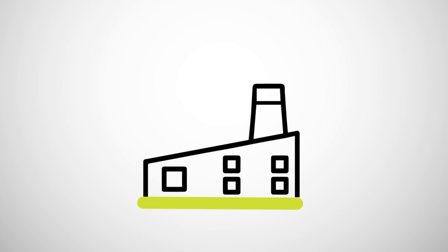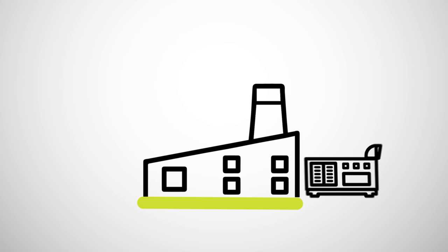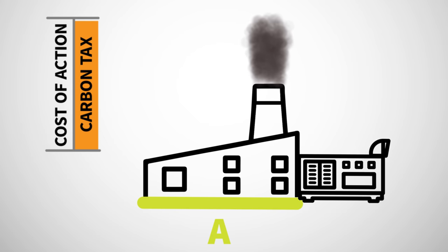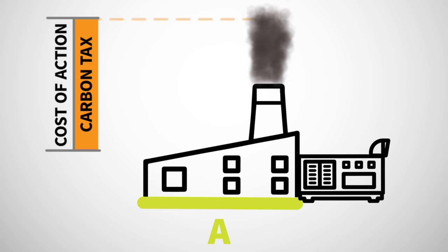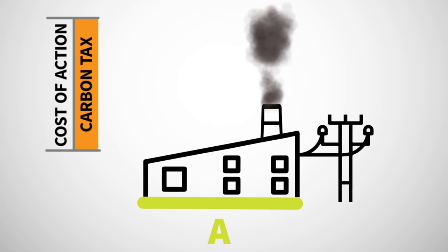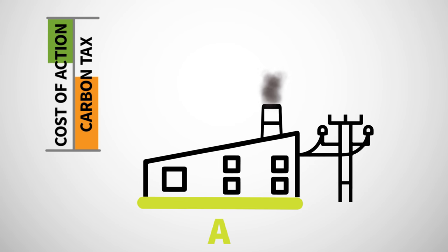Here's an example. Consider a given company, let's call it Company A. It chooses to take every action to reduce emissions that costs it less than simply paying the tax. For example, it decides to switch from diesel to electricity. Therefore, Company A's emissions are lower than they would have been without the tax.